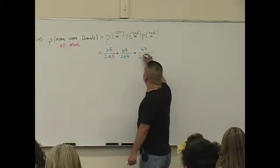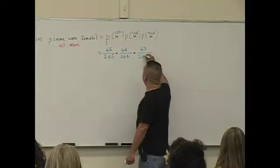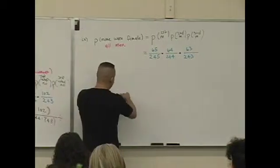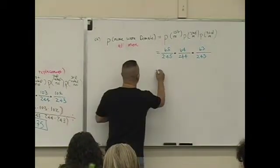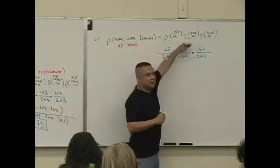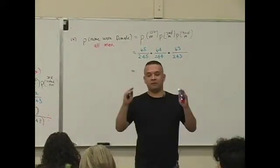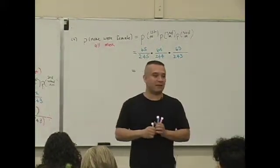63 out of 243. So how do you multiply fractions? Multiply all the numerators together in parentheses, divide by the denominators in parentheses. What did you guys get to the nearest thousandths?